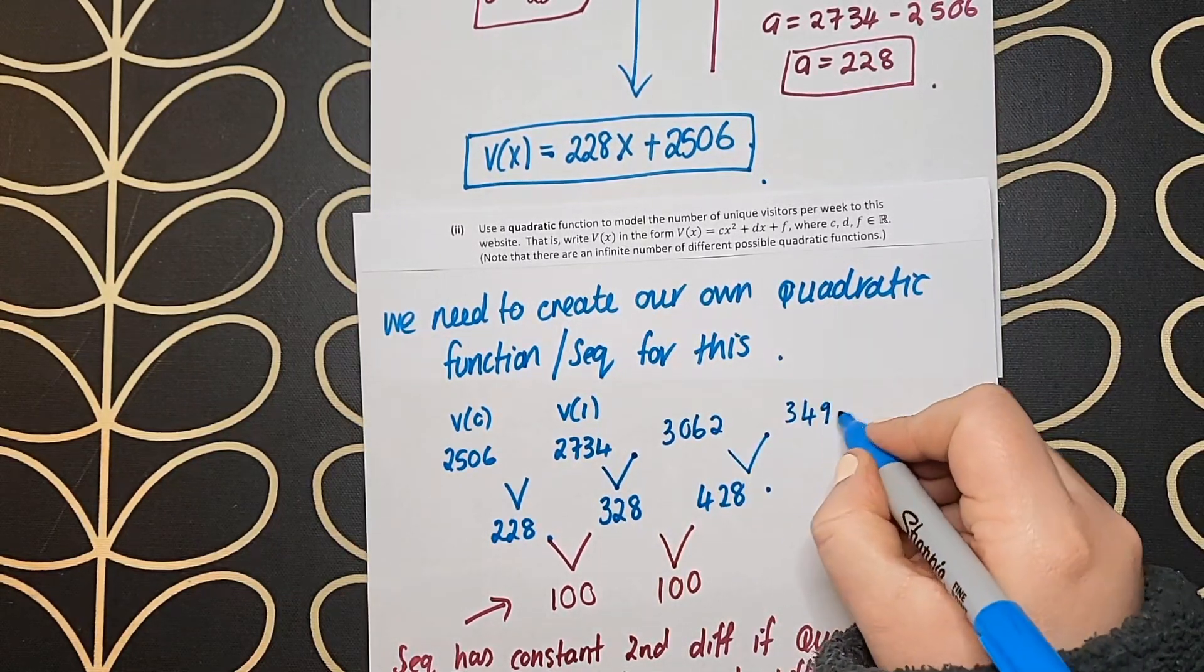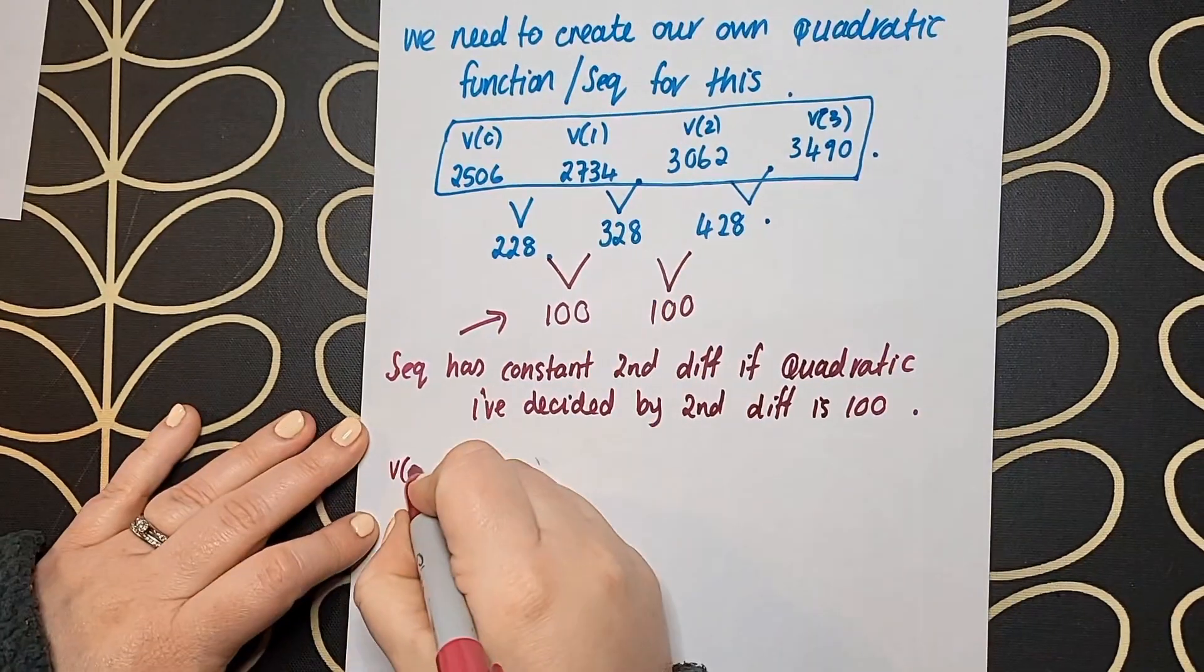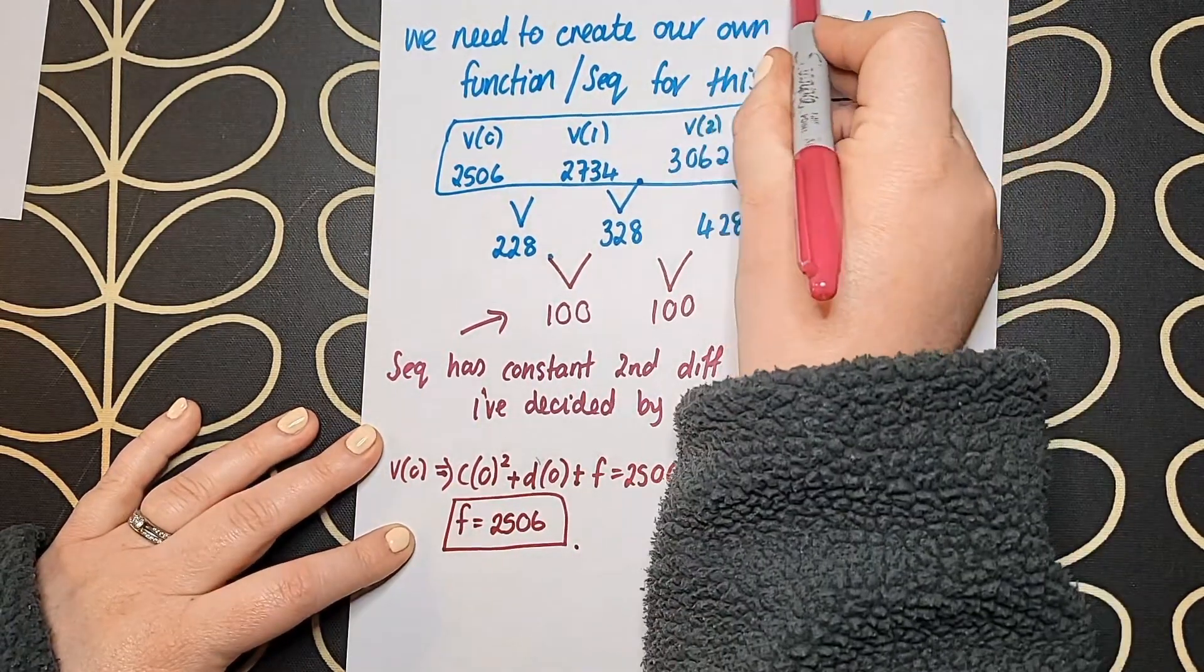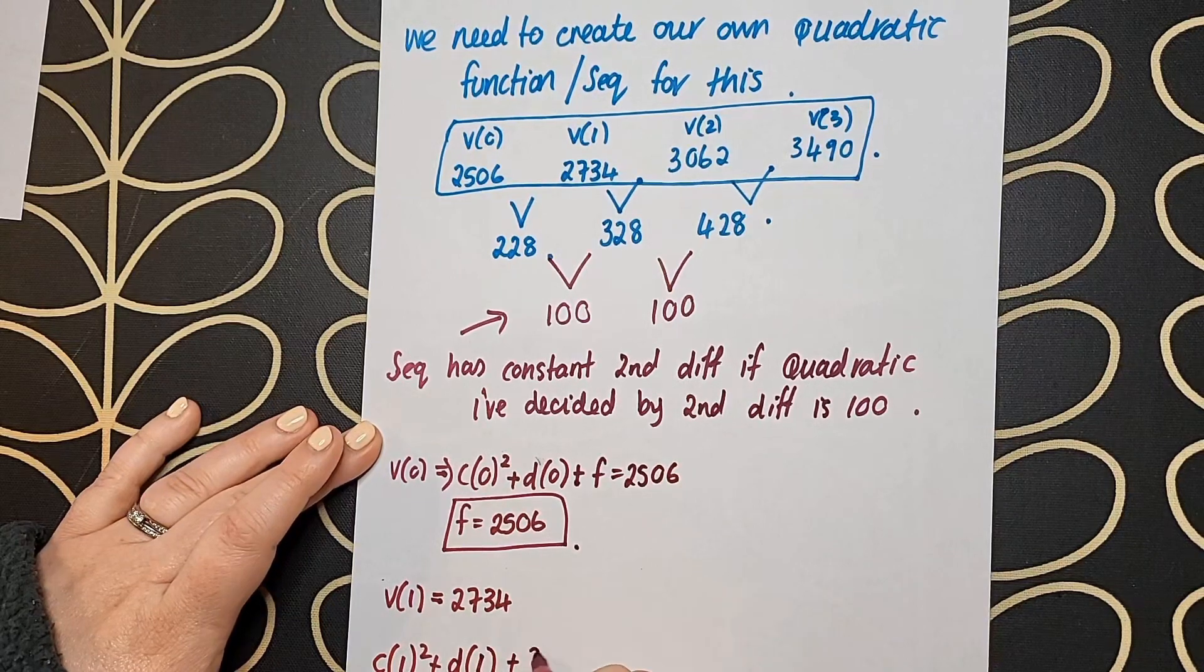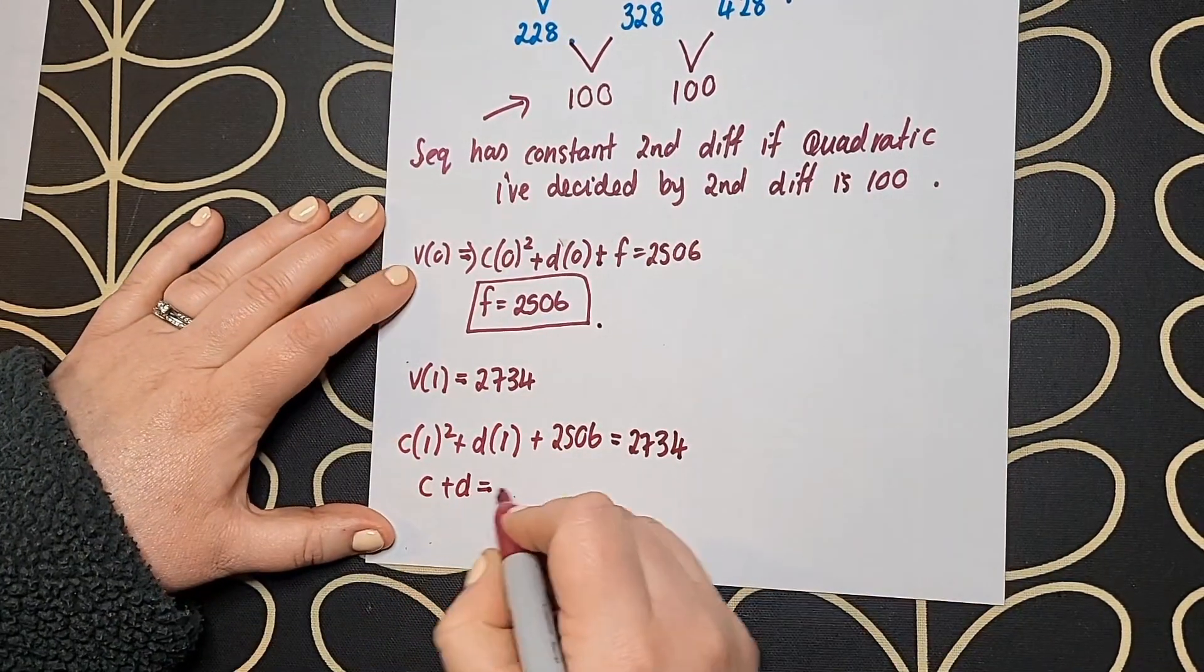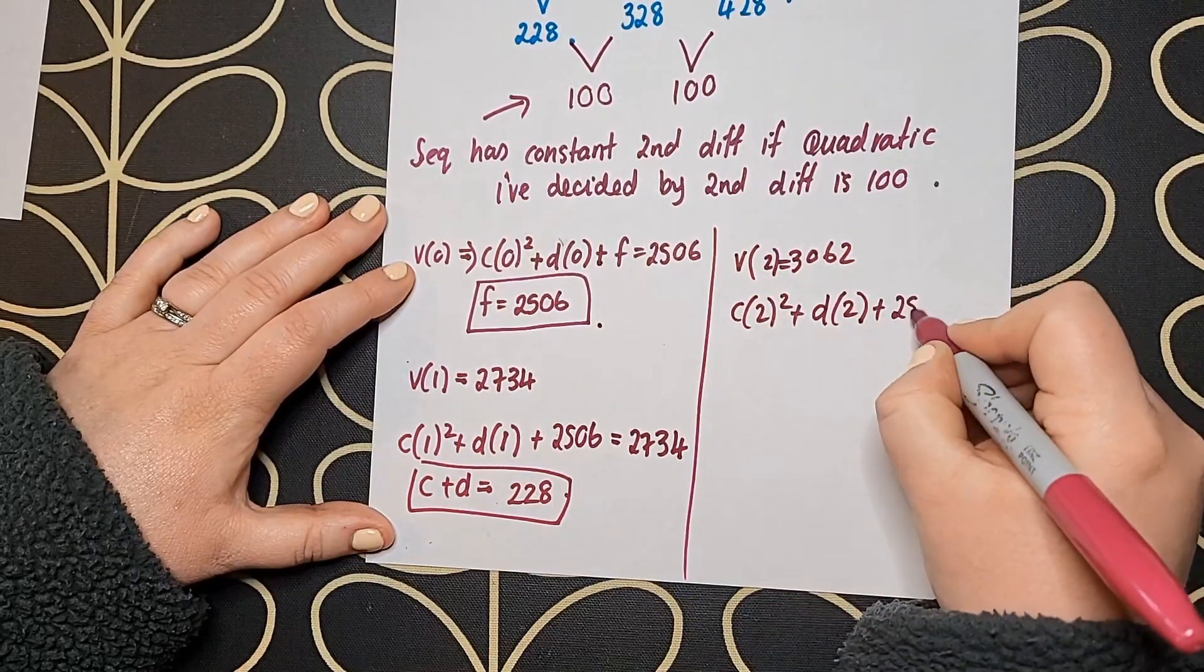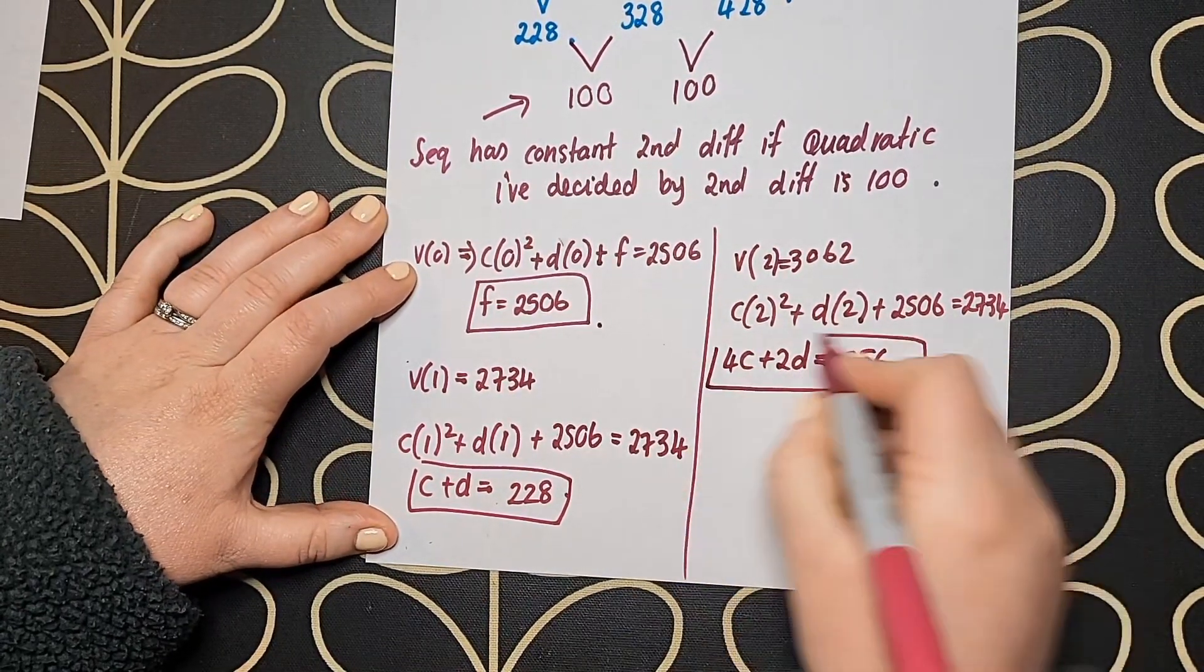In a quadratic sequence, the second difference is constant, so I decided my second difference would be 100 and built a sequence backwards from that. Now that I have v(0), v(1), v(2), etc., I sub that information into my function. With v(0), I find f = 2506. I then sub in v(1) and v(2) and get equations with c and d.